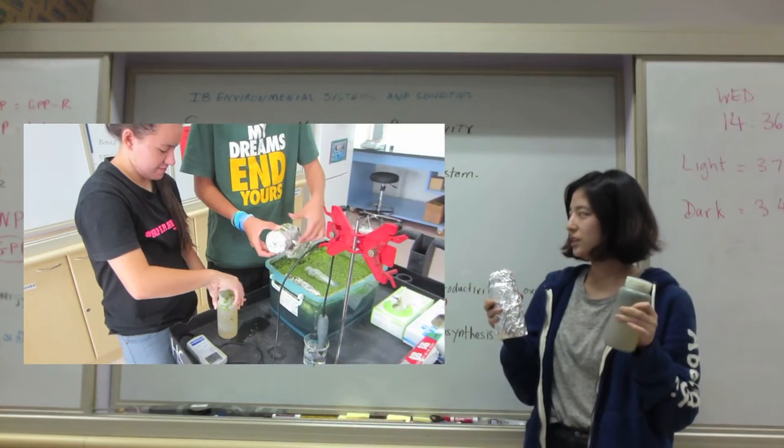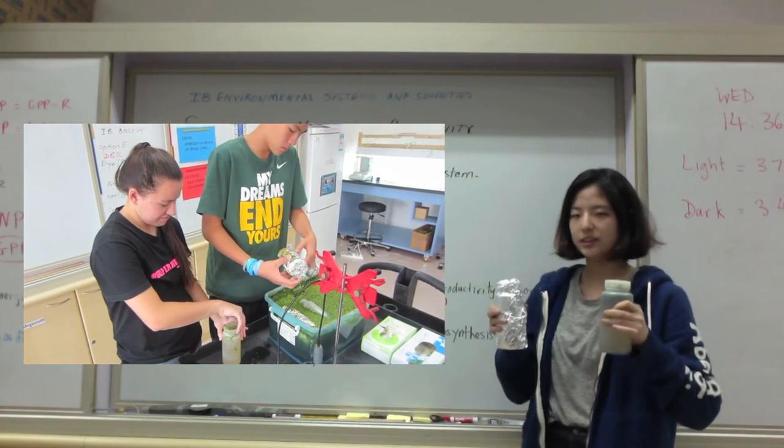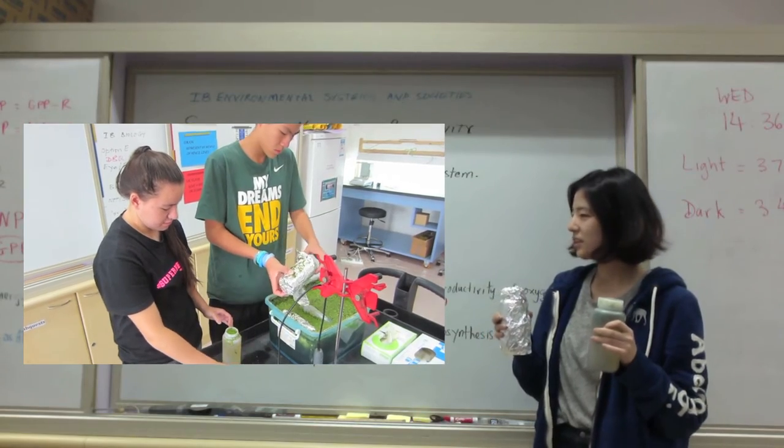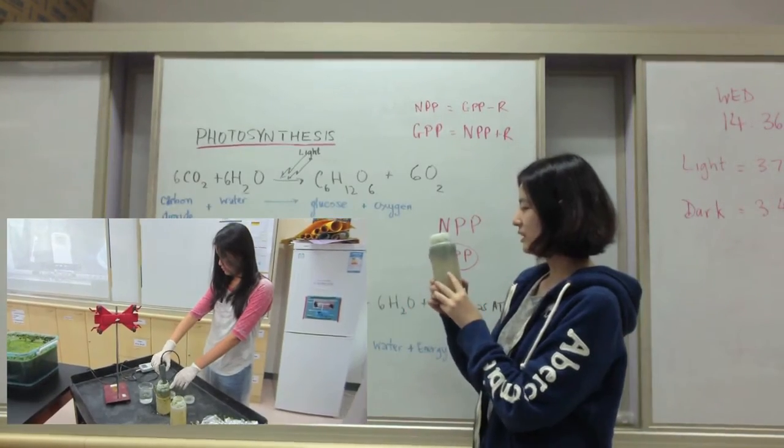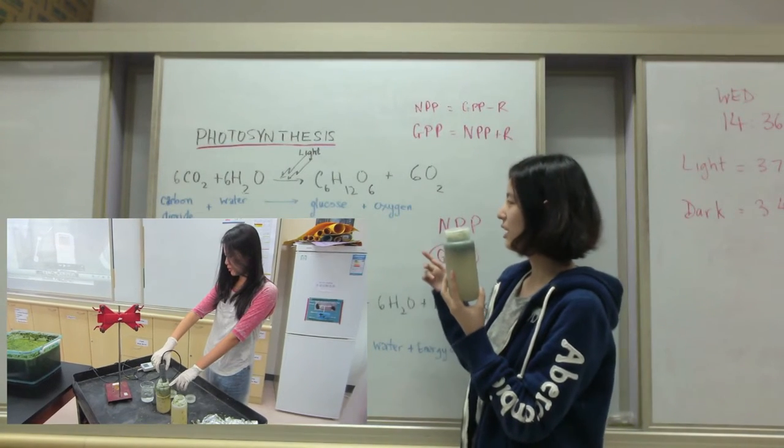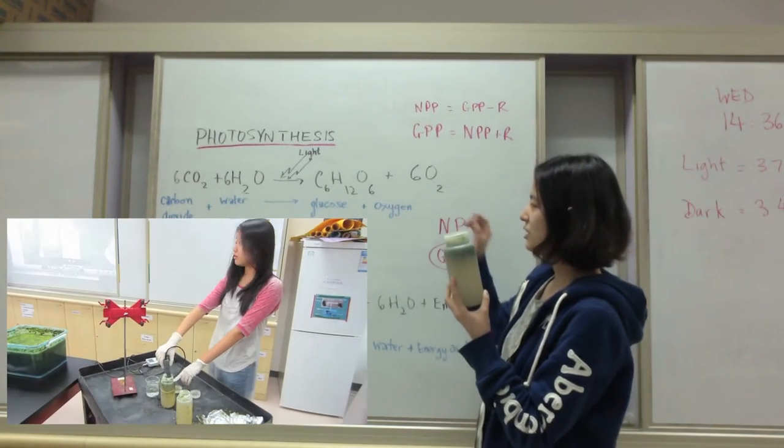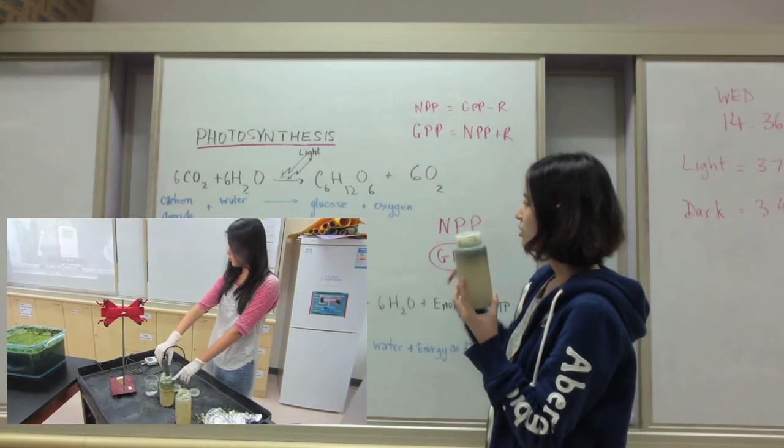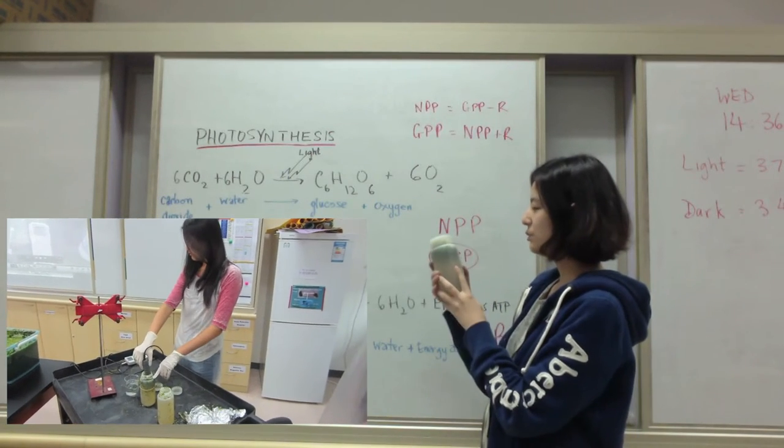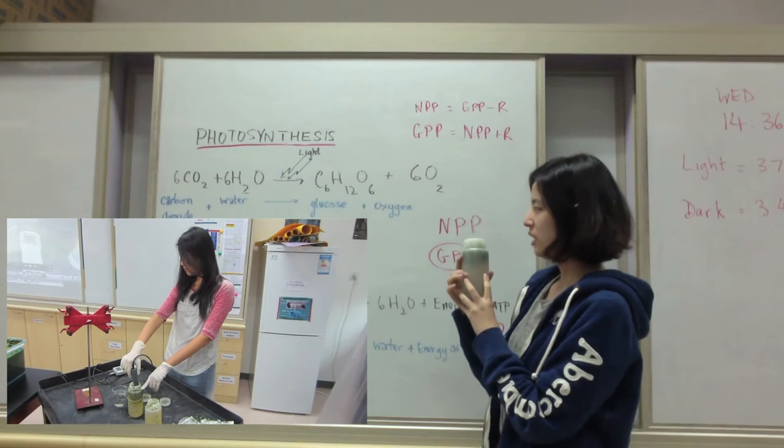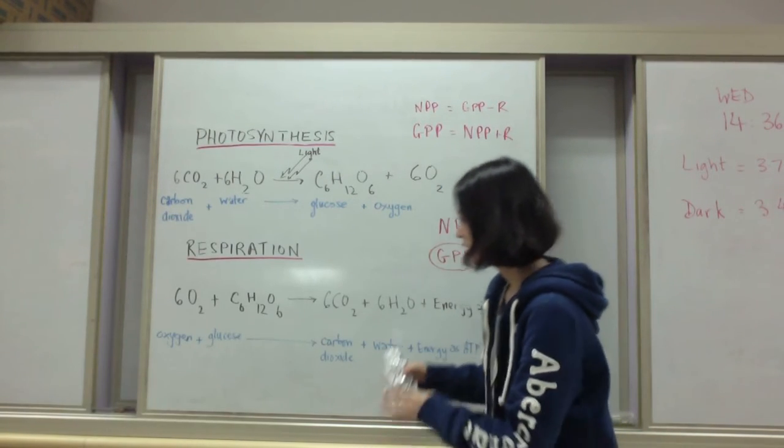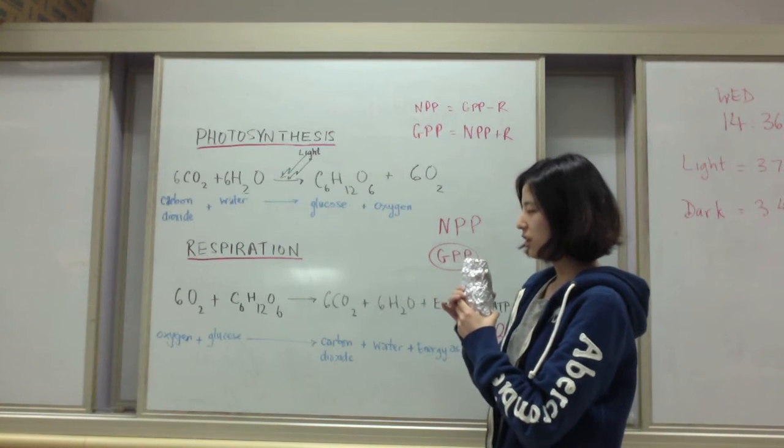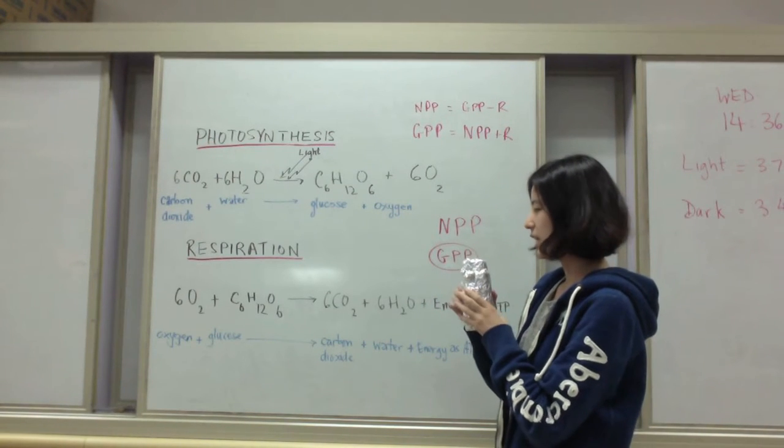You can use these two different rates to calculate the productivity. The light bottle here uses carbon dioxide that's inside the water and the water itself, and it gets the light to produce glucose and oxygen. In this one we can measure oxygen levels and carbon dioxide levels. And this one uses dissolved oxygen and the glucose inside the plants.